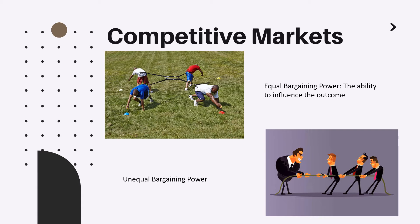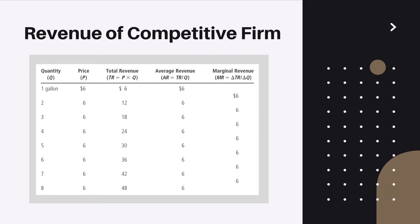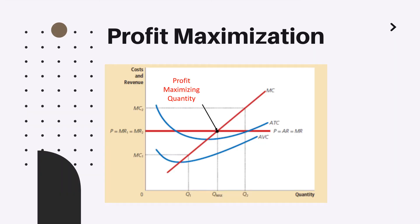Now let us discuss revenues in competitive markets. We have a table representing quantity and price. Since all companies are price takers, the price will be the same for everyone — in our case, six dollars. The next column represents total revenue, which equals price multiplied by quantity. The two other columns represent average revenue and marginal revenue. In competitive markets, average revenue and marginal revenue are equal.